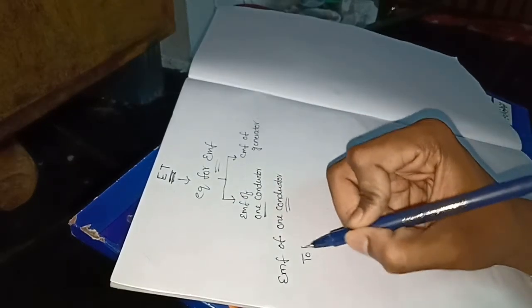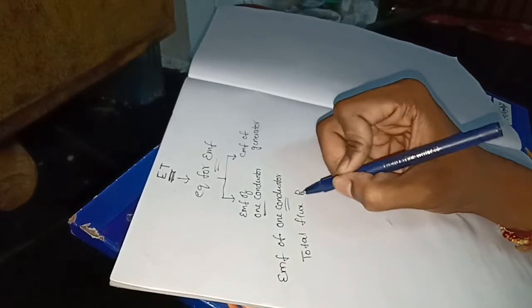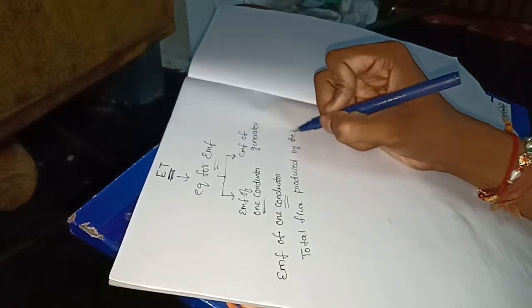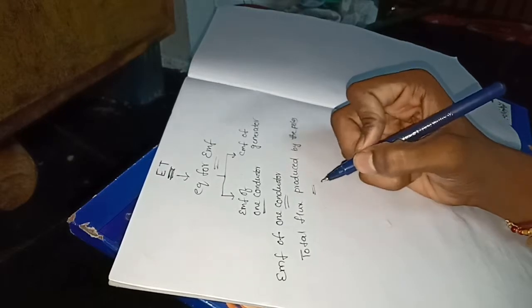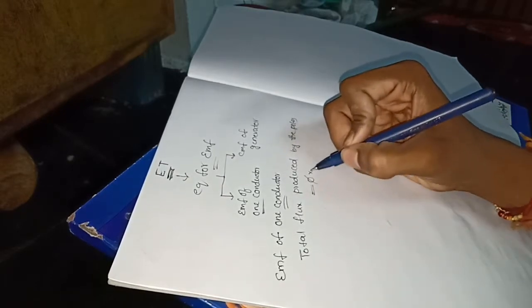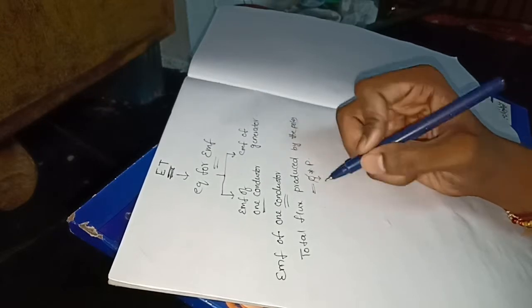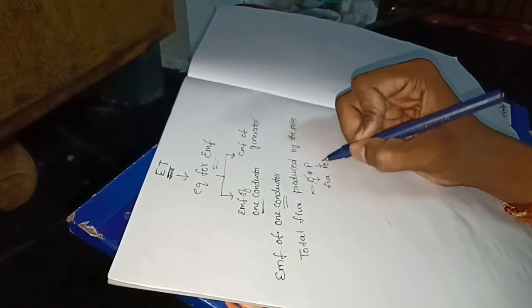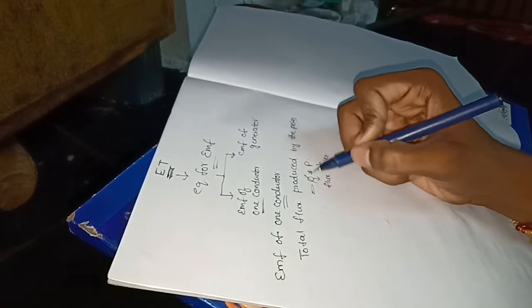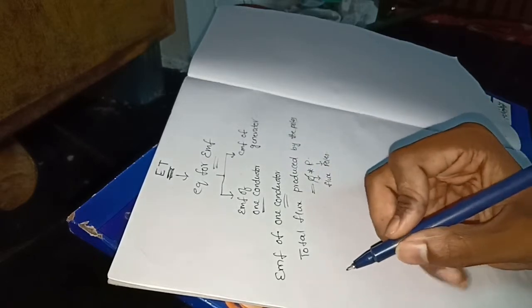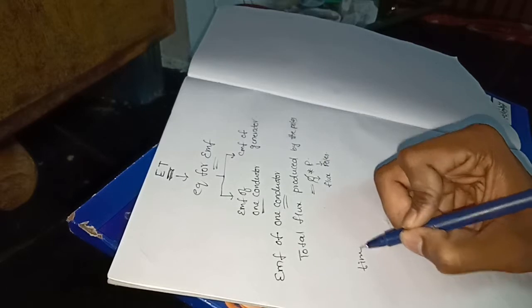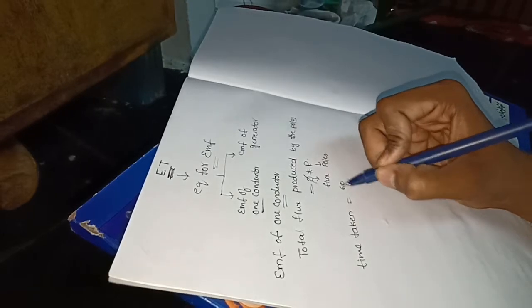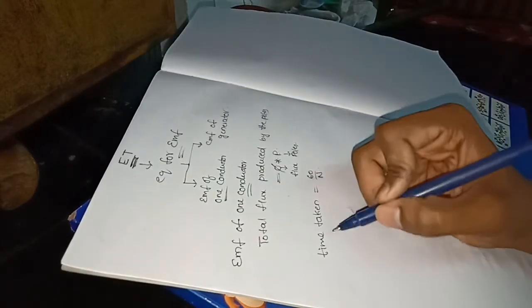The total flux produced by the poles is given by the formula: phi into P, where phi is the magnetic flux and P is the number of poles. The time taken to complete one revolution is given by the formula 60 by N.